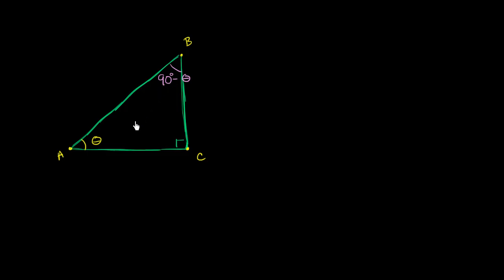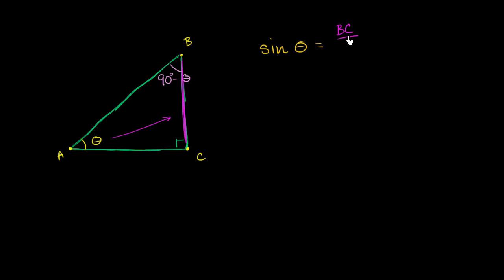Now, why is this interesting? Let's think about what the sine of theta is equal to. Sine is opposite over hypotenuse. The opposite side is BC, so this is going to be the length of BC over the hypotenuse. The hypotenuse is side AB — so the length of BC over the length of AB.